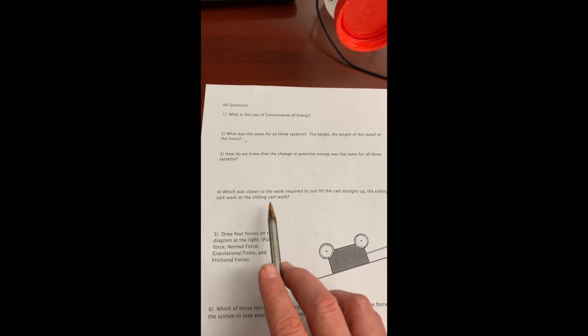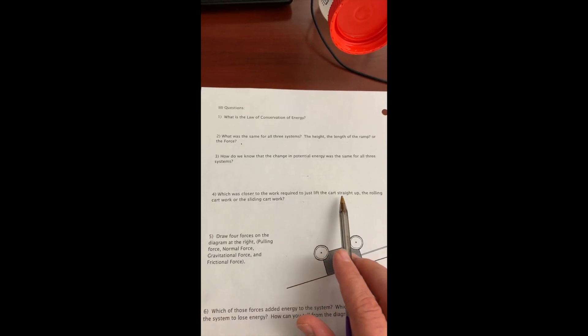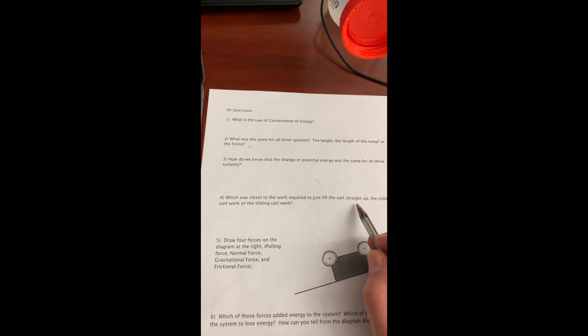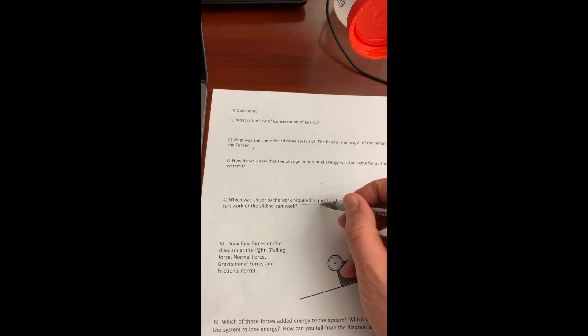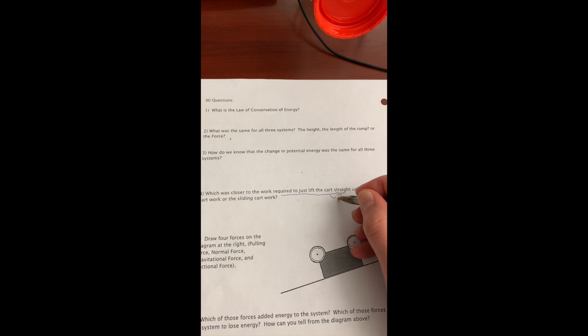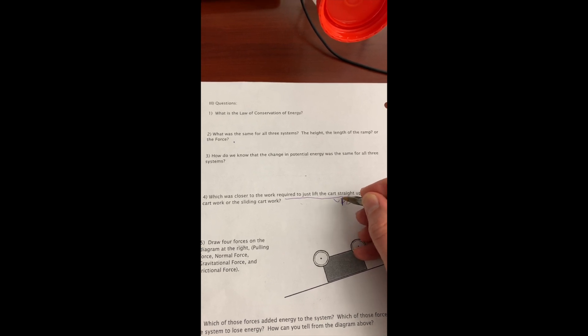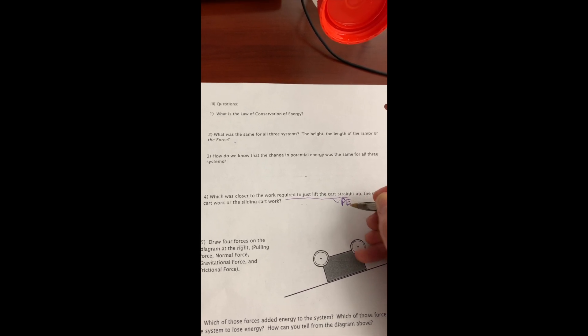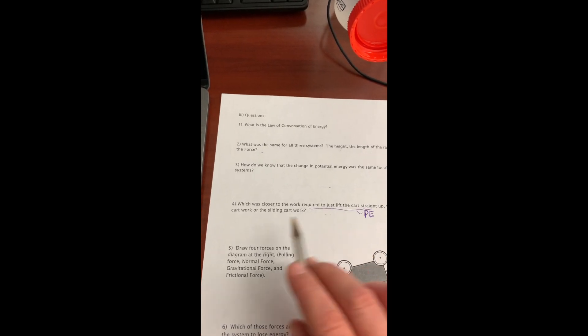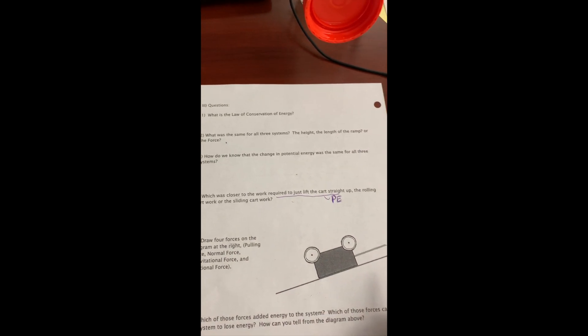It then says, which was closer to the work required to just lift the cart straight up? And the work required to lift the cart straight up, that's another way of saying the potential energy change. So which was closer to the potential energy change? Was it the rolling cart or the sliding cart?